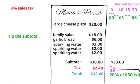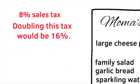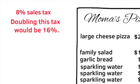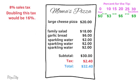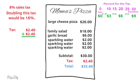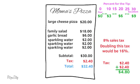In my city, I can quickly calculate a 16% tip by doubling the 8% sales tax. The tax on this bill is $2.40, so if I double $2.40, I'll have a $4.80 tip, which is a 16% tip, and I usually round that up to an even $5.